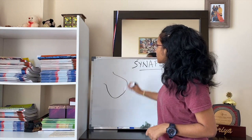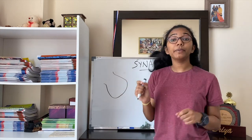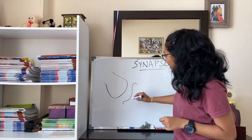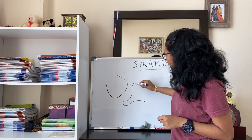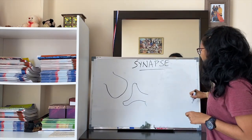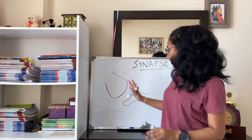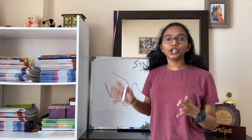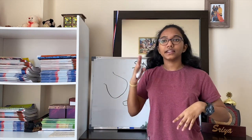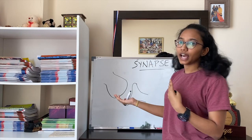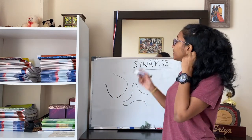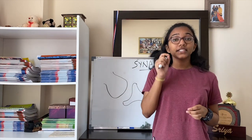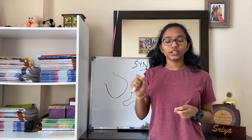This is the axon terminal or synaptic knob of the first neuron, and this is the dendrite end of the second neuron. This will extend into the cell body — this is a zoomed-in image showing the end of one neuron. So when an action potential is passing through this neuron, sodium channels open, sodium ions come in, there is a change in polarity, and then the electrical signal is passed. When this action potential reaches the end, it stimulates the opening of calcium ion channels.